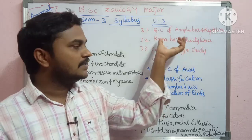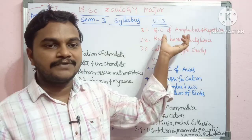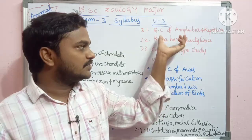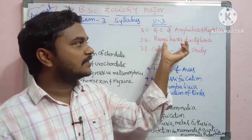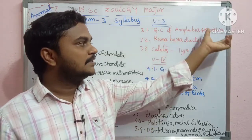This unit also includes brain and sense organ studies, and covers both amphibia and reptile type studies comprehensively.